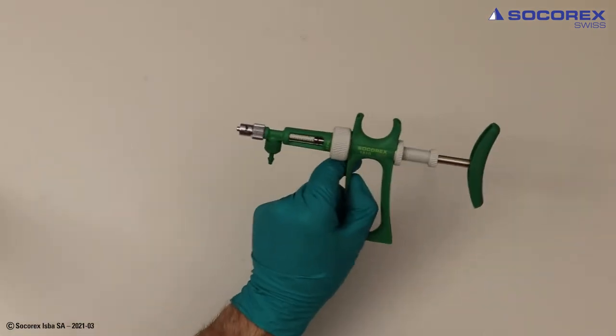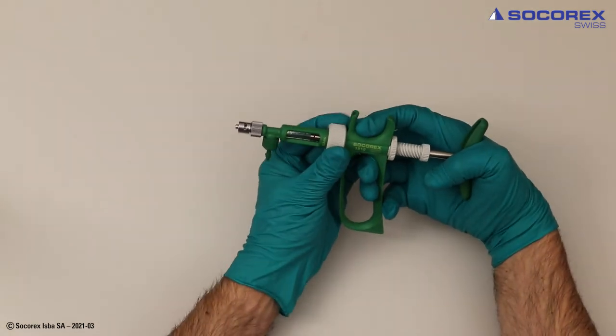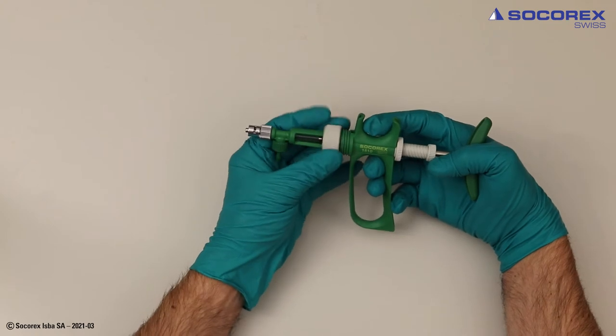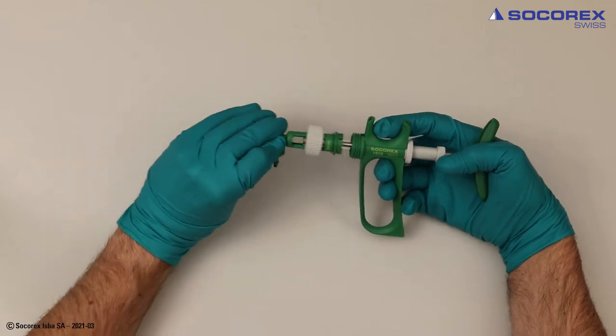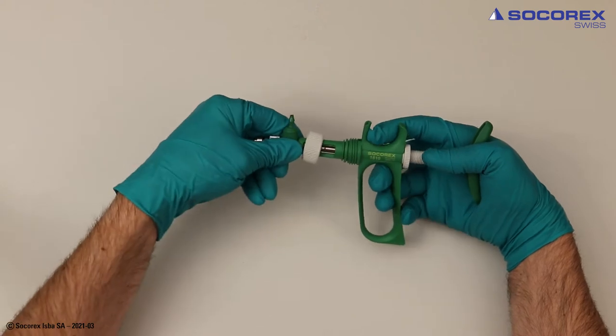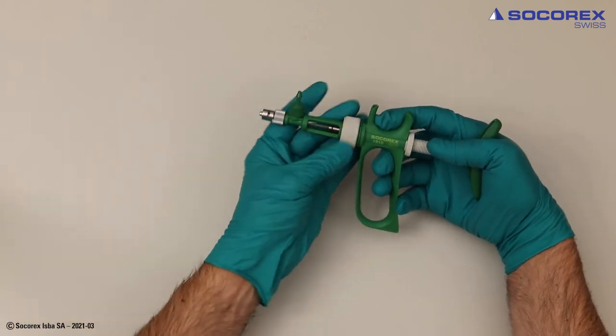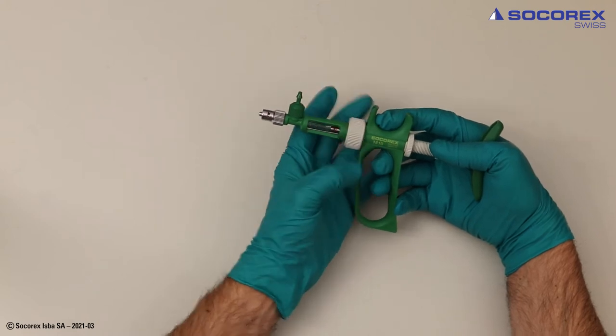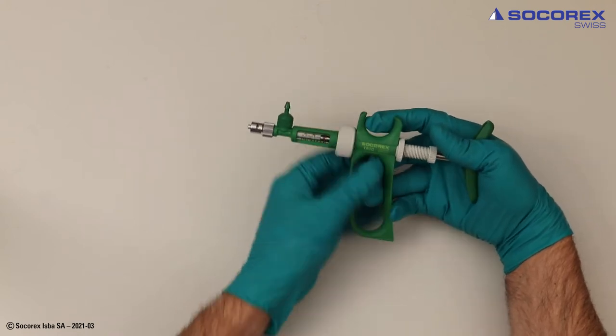To get started, select body position by unscrewing the body nut, adjust body position to one of eight possible angles, twist glass cylinder for optimal graduation viewing before re-tightening the casing nut.